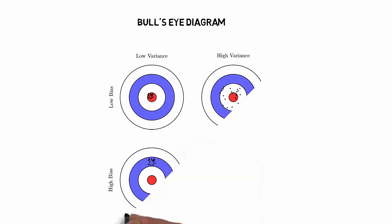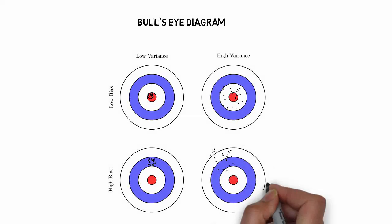To understand bias and variance errors better, let us look at this bullseye diagram. The red circle represents the target. Having low bias and low variance results in our model predicting values very close to the target.